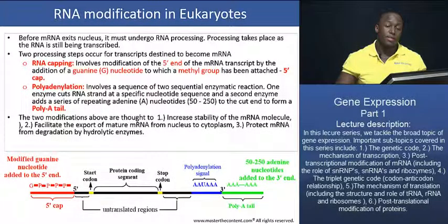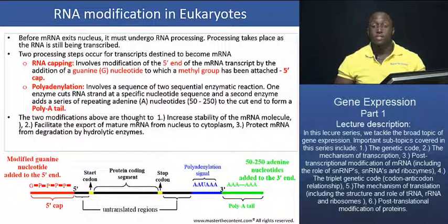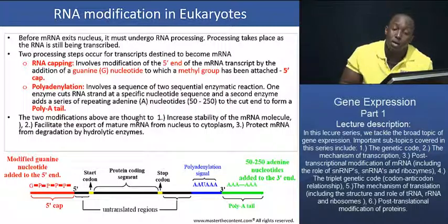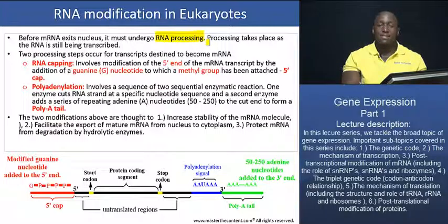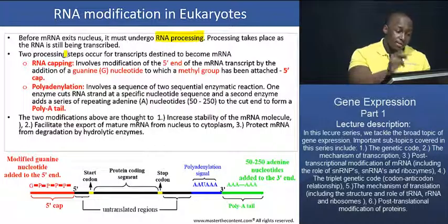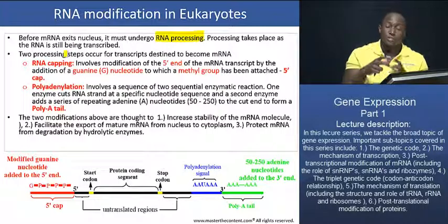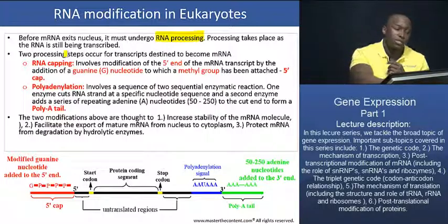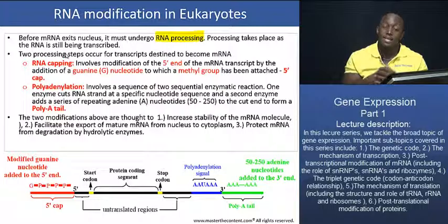We are going to talk about RNA modification. Once the RNA transcript is formed in the case of eukaryotes, it's called pre-mRNA — immature mRNA. So it must undergo RNA processing. This processing begins as the RNA strand is still being transcribed, and it consists of two main distinct steps. The first step in the processing of pre-mRNA is called RNA capping.